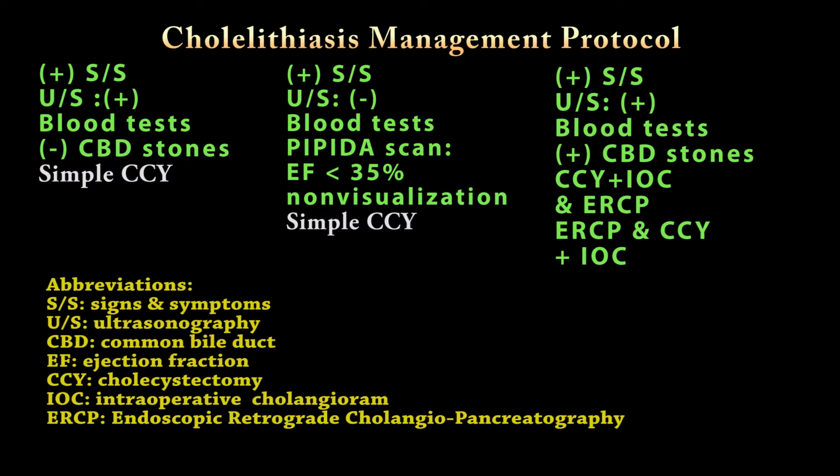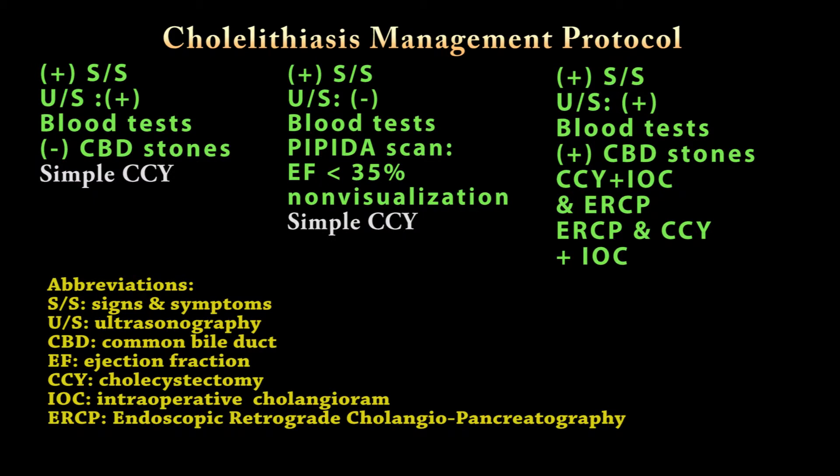In the third scenario, if the patient has symptoms and both blood testing and ultrasound suggest the presence of common bile duct stones, then the treatment is cholecystectomy plus intraoperative cholangiogram and an attempt to clear the common bile duct stones. If unsuccessful, an ERCP should be performed — or an ERCP may be performed first, followed by cholecystectomy and intraoperative cholangiogram. This decision should be coordinated between the surgeon and the gastroenterologist who will perform the ERCP.